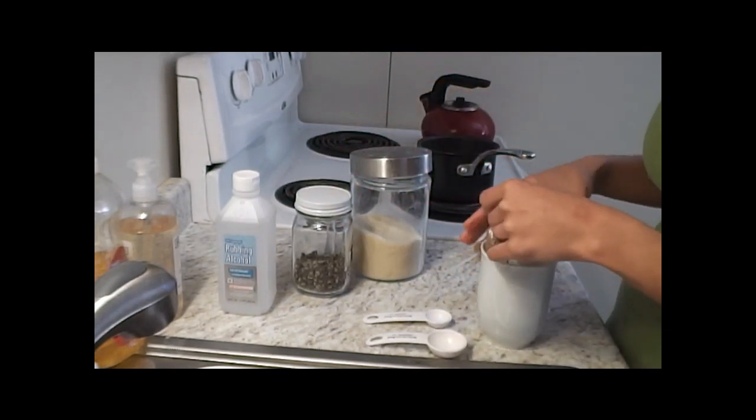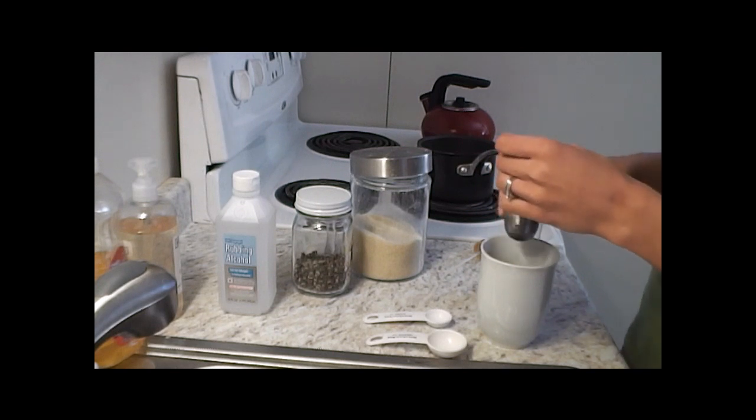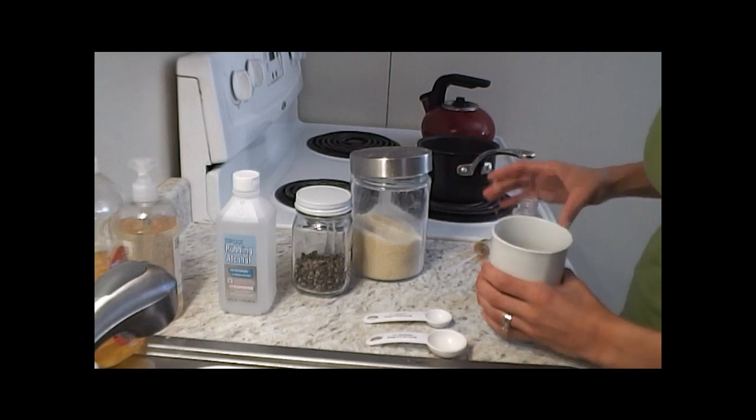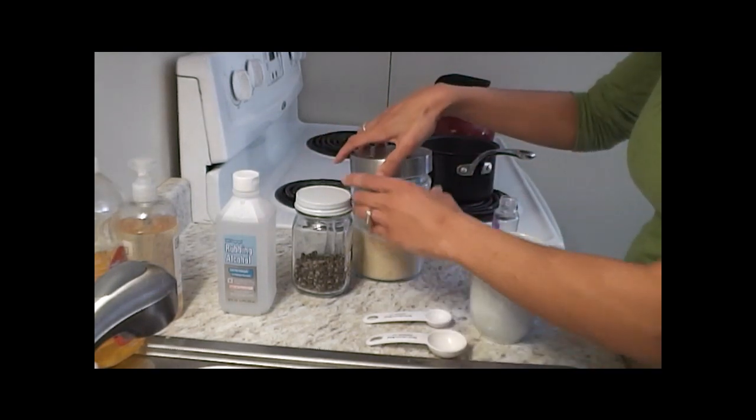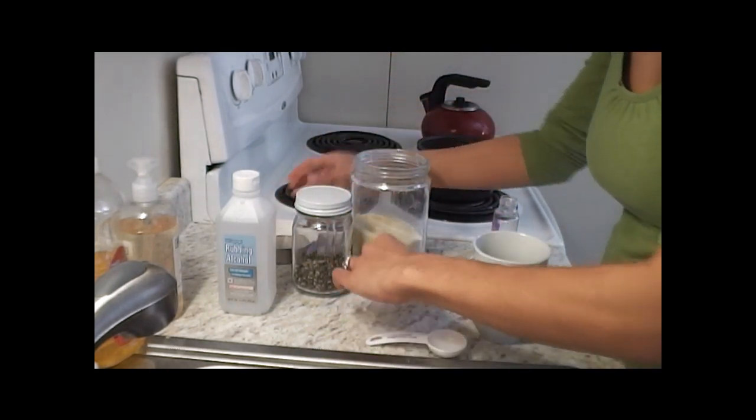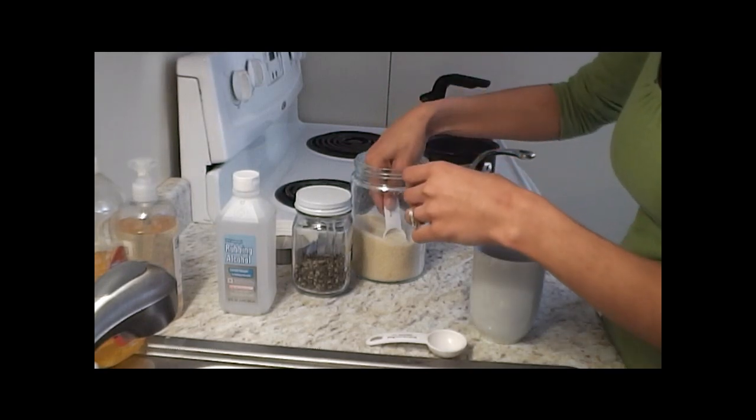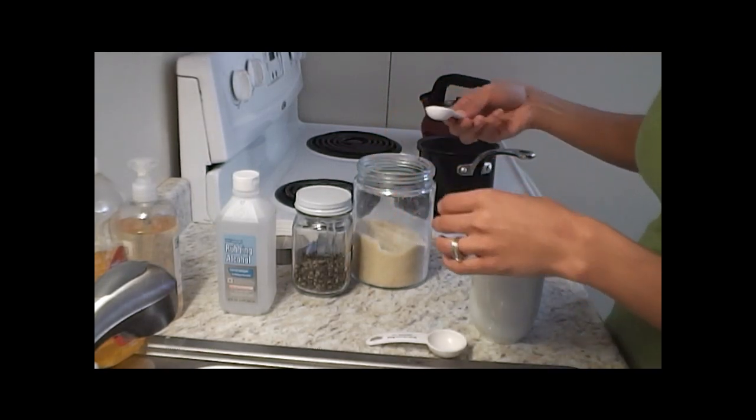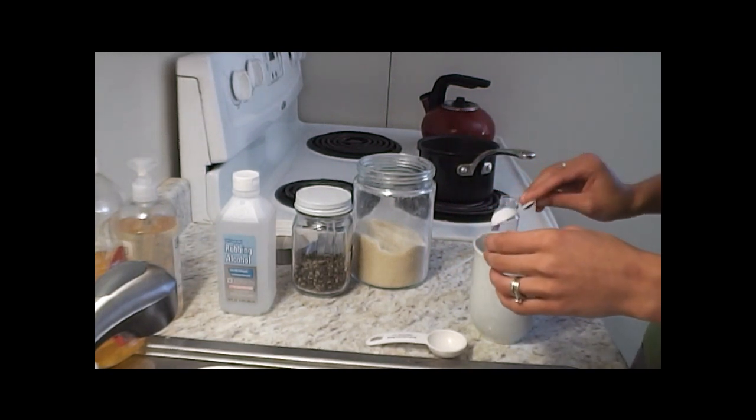After about five minutes, take the tea out and you're left with one cup of tea here. Then you need to add two teaspoons of sugar. I'm using a raw organic cane sugar, but you can use other sugars.